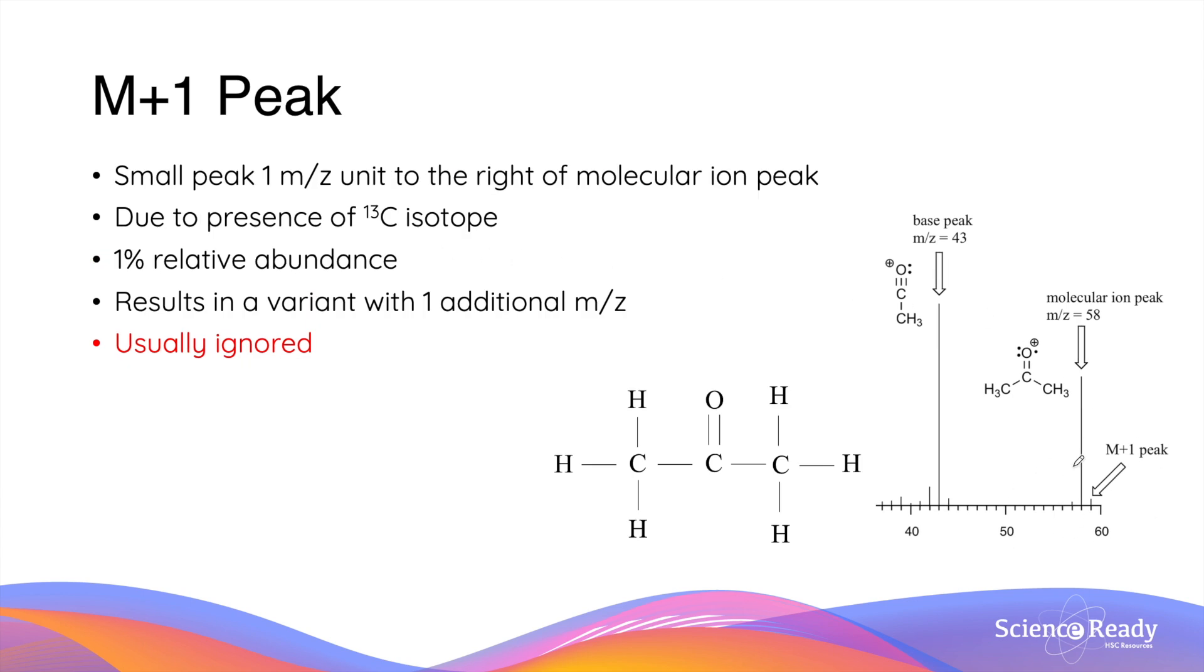You may have noticed that there's a smaller signal to the right of the molecular ion peak. This is called the M plus 1 peak. It is a small peak of exactly one mass to charge unit to the right of the molecular ion peak. This is due to the presence of a carbon-13 isotope in organic compounds. Carbon-13 is a rather rare isotope with roughly one percent relative abundance. So when a carbon-13 isotope is present in an organic molecule, it gives rise to a variant with one additional m/z ratio.